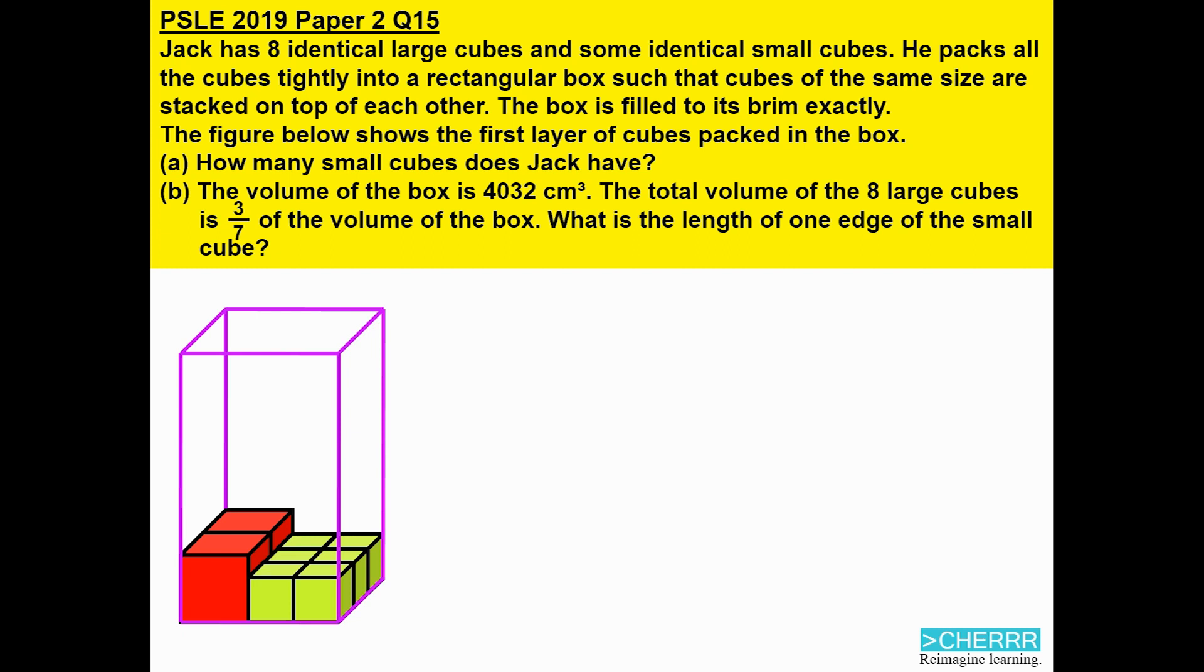Part B: The volume of the box is 4032 cubic centimeters. The total volume of the eight large cubes is three out of seven of the volume of the box. What is the length of one edge of the small cube?